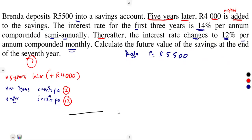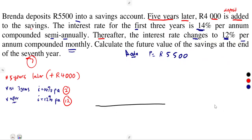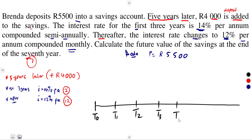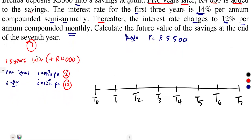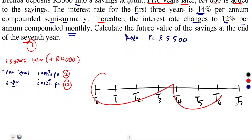The timeline is the best way to attempt this question. Subdividing this into seven years: T0, T1, T2, T3, T4, T5, T6, and T7. The whole period along is for seven years — that is the period we are given.